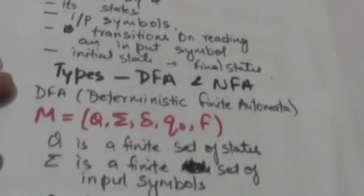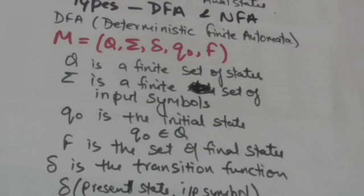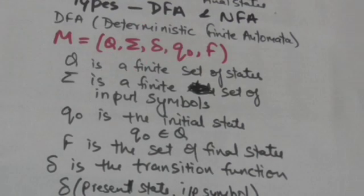Now suppose there is a DFA M. It can be defined by a quintuple (Q, Σ, δ, q₀, F), where Q is a finite set of states of DFA M, and Σ is a finite set of input symbols which this DFA M can read.